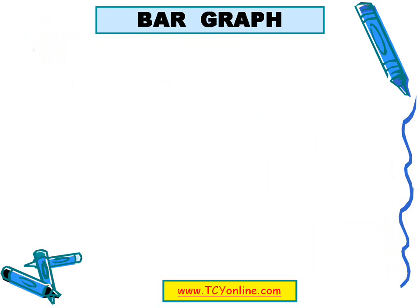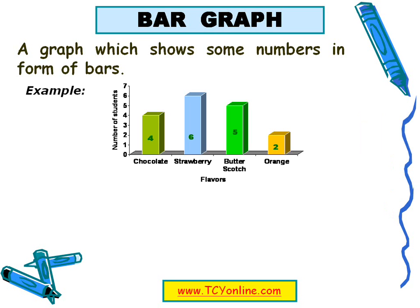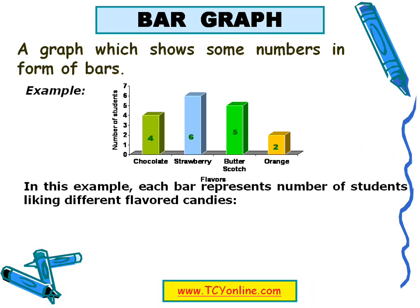Now let's define a bar graph. A graph which shows some numbers in the form of bars is called a bar graph. This bar graph shows different flavored candies liked by different numbers of students. The x-axis represents the different flavors of candies, and the y-axis represents the number of students. We can see that the chocolate bar goes till 4, so chocolate flavored candy is liked by 4 students.